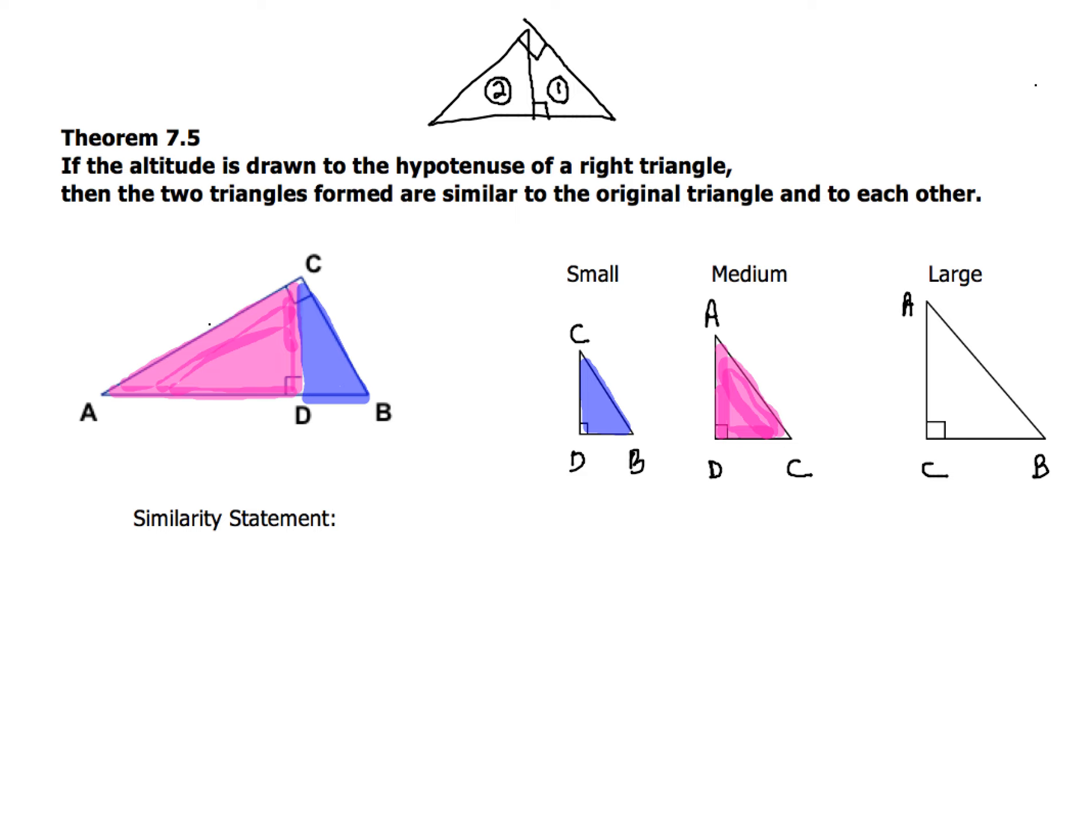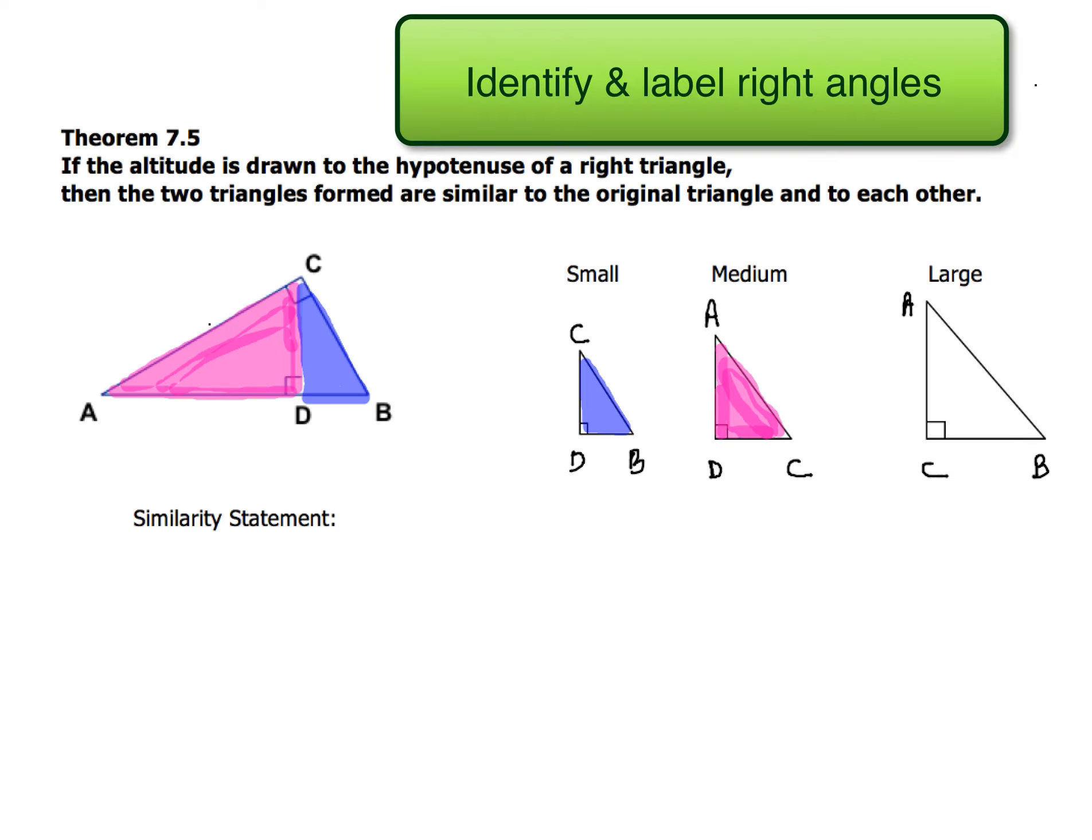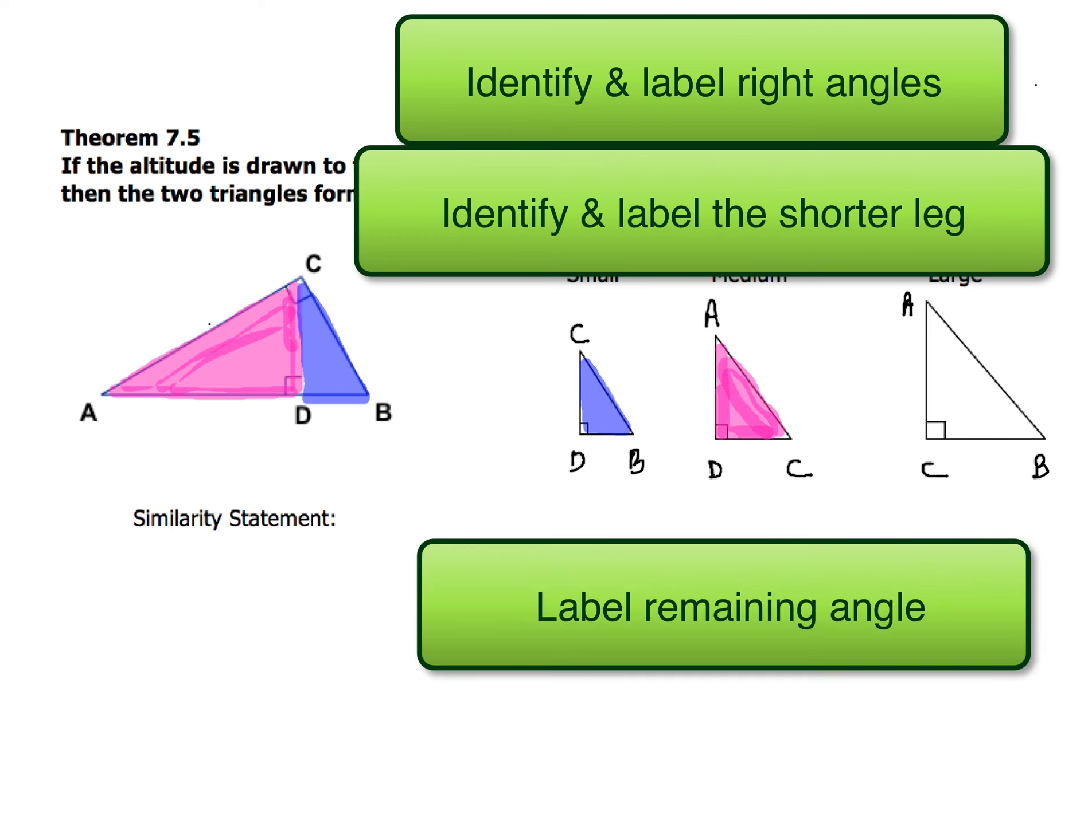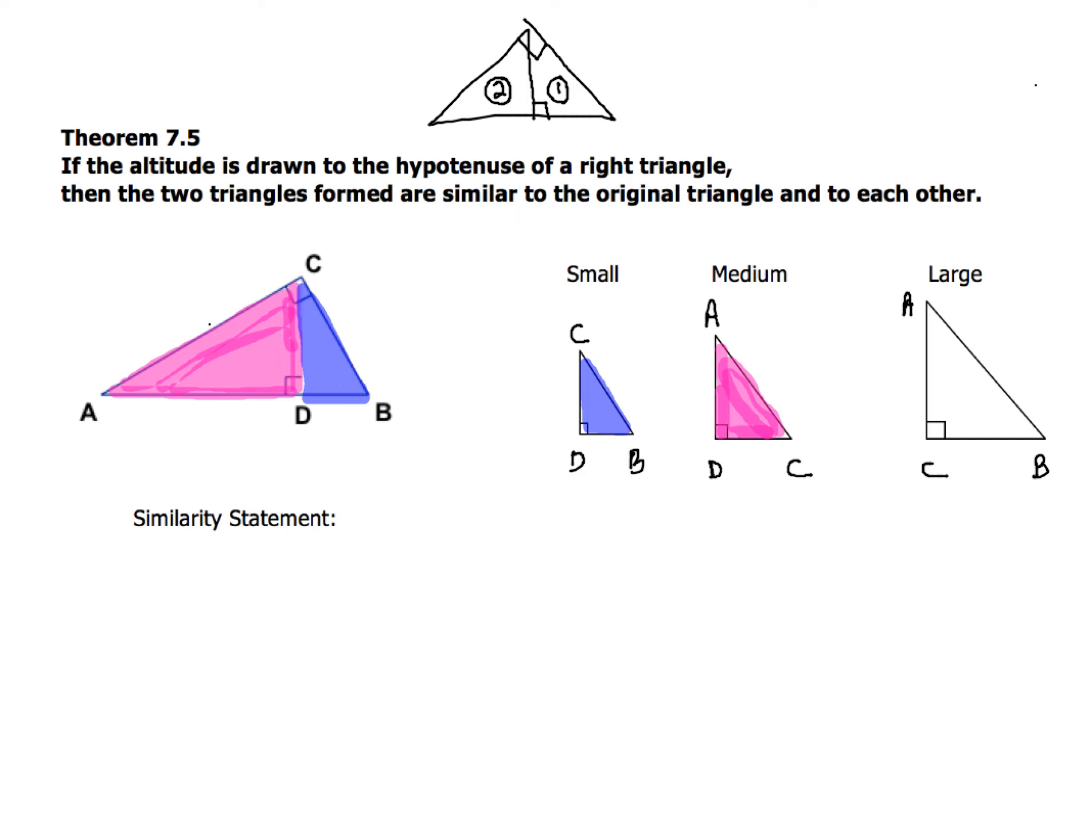Once you've got that set up correctly, doing the similarity statement's a piece of cake. So let's just review that real quickly. First thing you're going to do, identify the right angle. Second thing you're going to do is identify the short leg. And then the last thing you'll do is just fill in the remaining letter to complete the triangles. That's all you have to do.